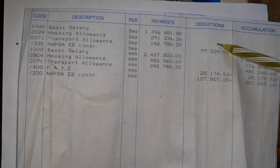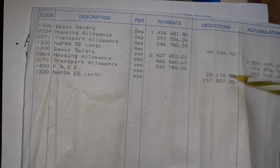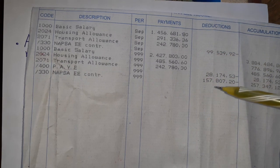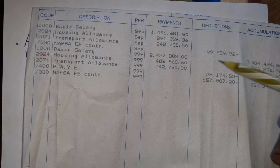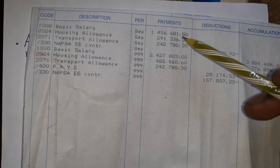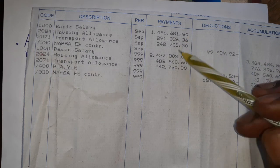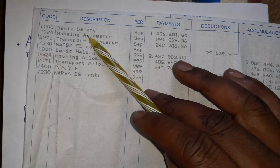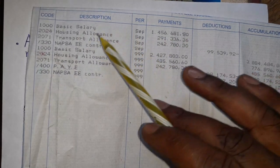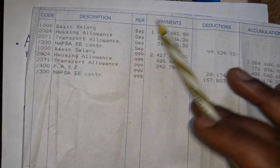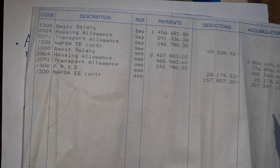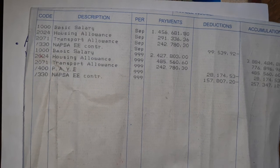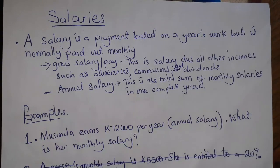After you have subtracted those deductions, what you remain with is what we call net pay. But here we are looking at gross salary. Gross is when you've added the basic salary plus the housing allowance, transport allowance, and any other allowance that you may be entitled to.